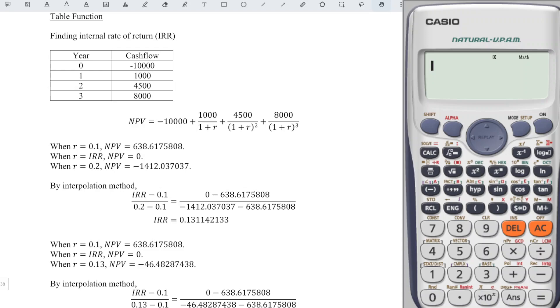When finding the internal rate of return, we know that the initial value is very important and it determines how many steps we have to take before we are able to obtain the internal rate of return. By using the interpolation method with this calculator, we can minimize the steps.